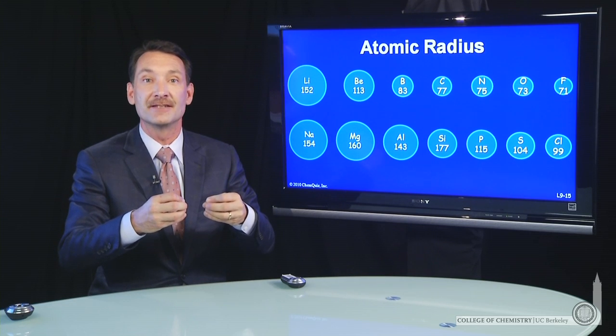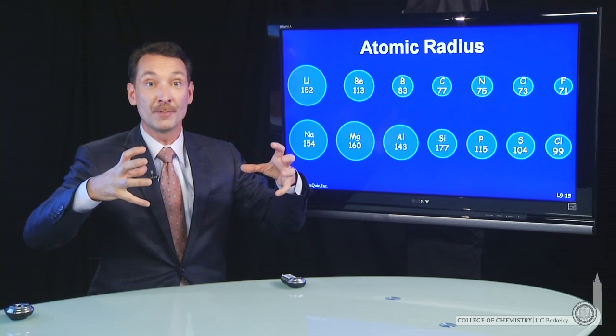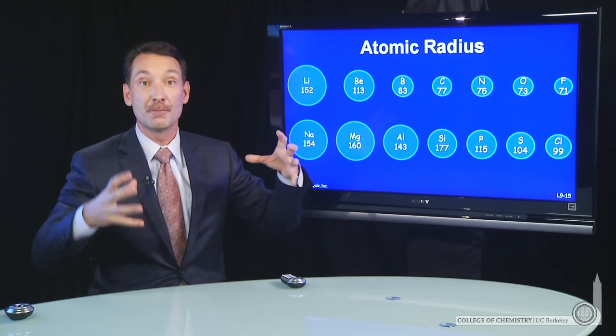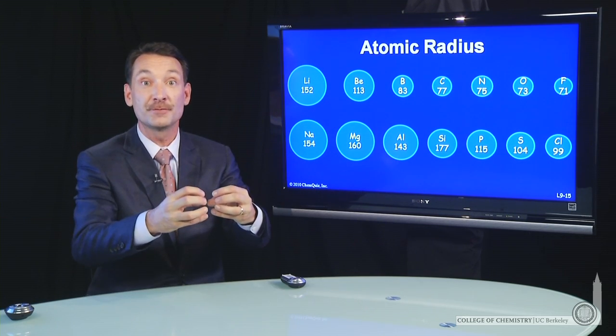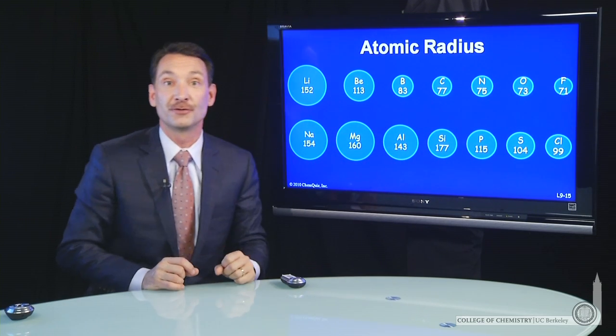But the electrons are in the same region of space. So those 2p orbitals that start out rather large at boron are contracting and getting smaller and smaller by the time I get over to fluorine.